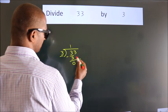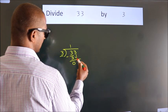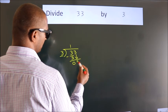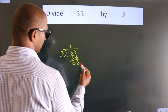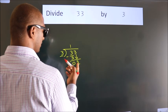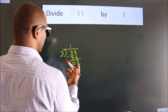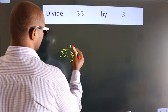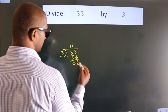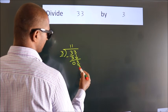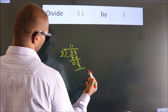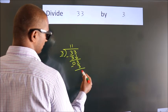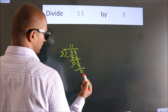After this, bring down the beside number — so 3 comes down, giving us 3. When do we get 3? In the 3 times table — 3 once is 3. Now we subtract, and we get 0.